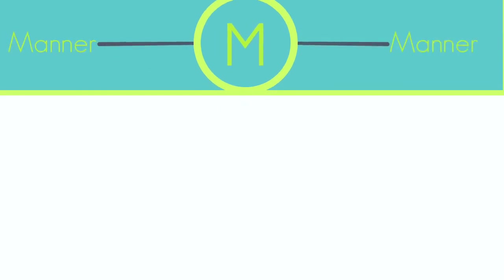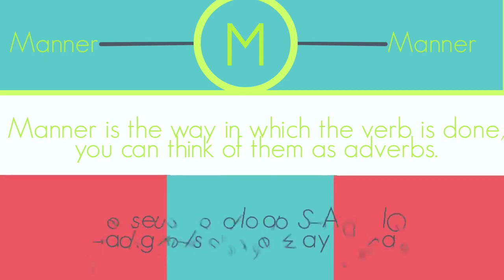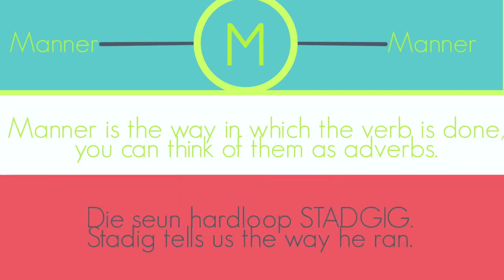The next letter is M, which stands for Manner. Manner is the way in which the verb is done — you can think of them as basic adverbs. For example, 'stadig' can be a manner word. In a sentence, it would say 'Die seun hardloop van dag, stadig,' which tells us that the boy ran slowly.